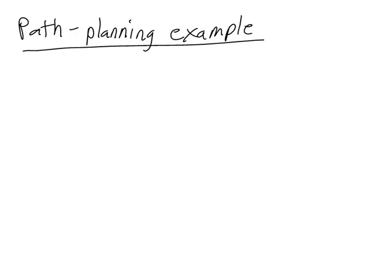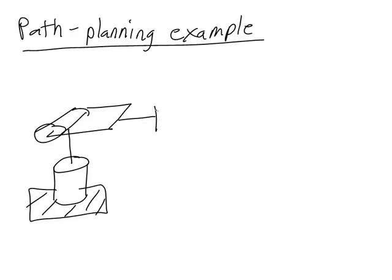I'm now going to show you an example of how we do path planning for a manipulator. For this example, I'm going to assume we're using a spherical manipulator so that I can show you what the difference is between revolute and prismatic joints in our path planning operation. Here I have a cylindrical manipulator that I'm finishing up drawing, and I'm going to draw my zero frame on this manipulator because this is the Cartesian frame that I will use to specify the Cartesian locations of the end effector.